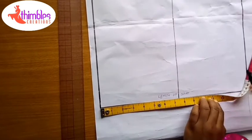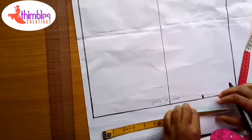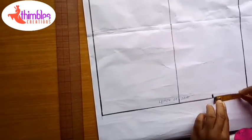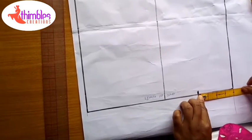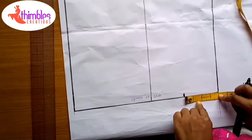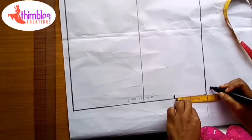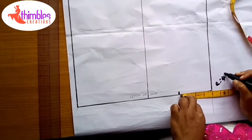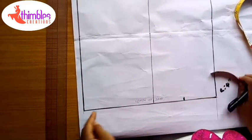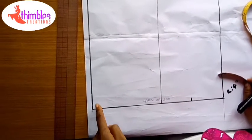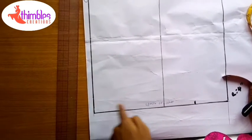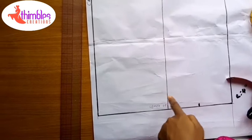Now when I mark, I measure the remaining one. What I have here is 4 inches. This is whatever is remaining, 4 inches. So what I do is I share the 4 inches between the center back and the side seams.